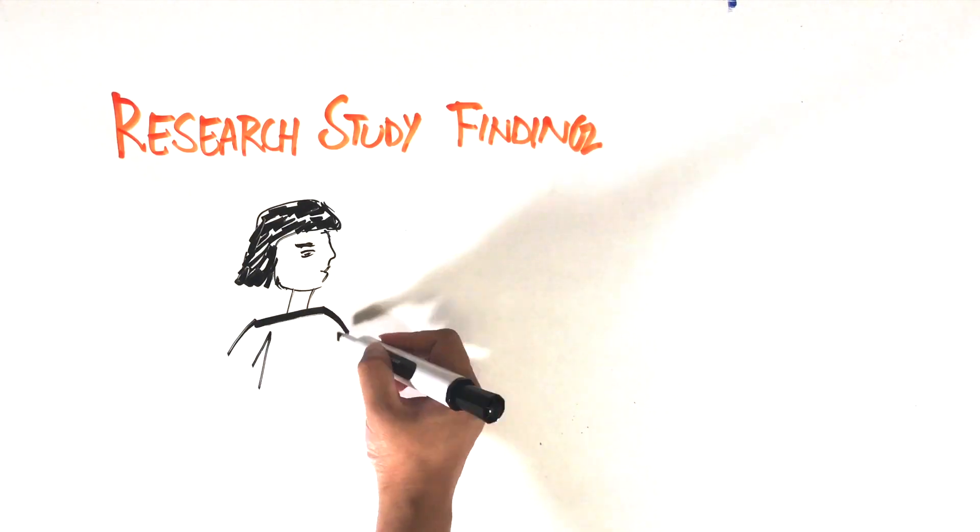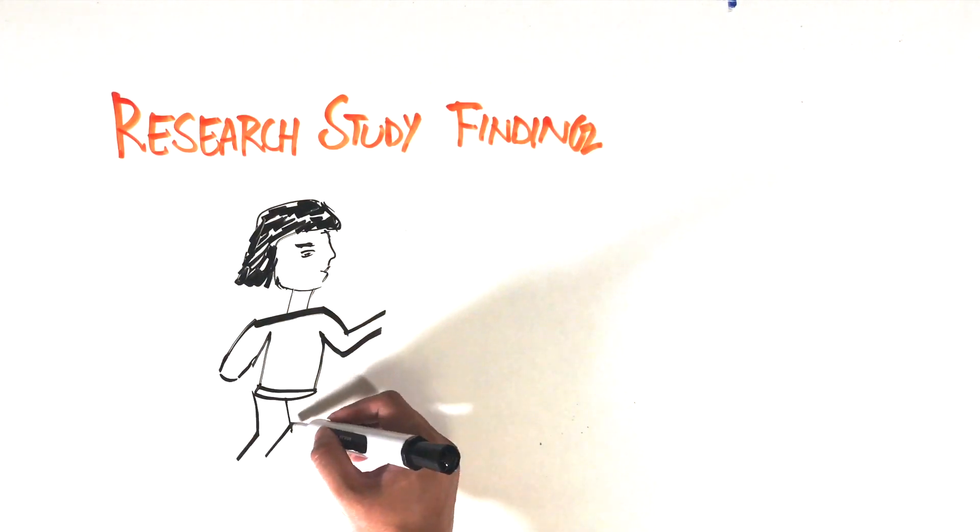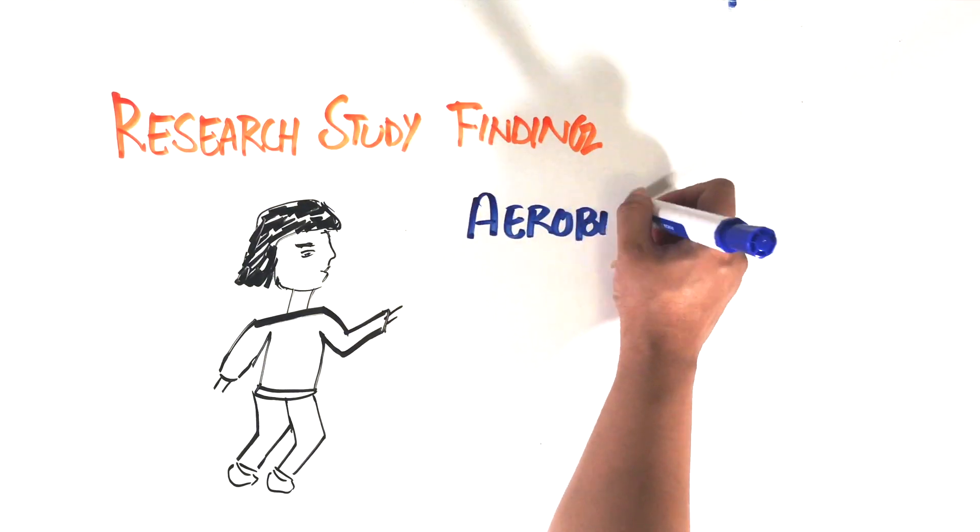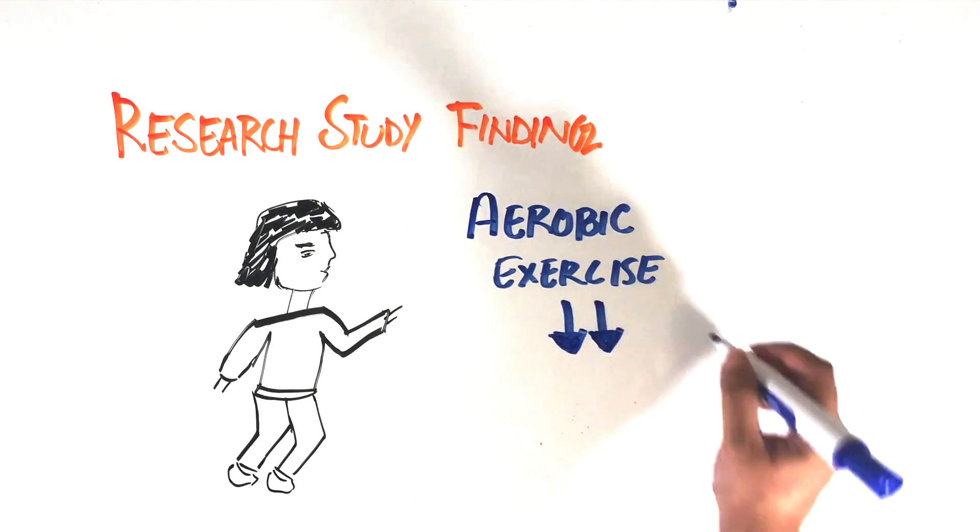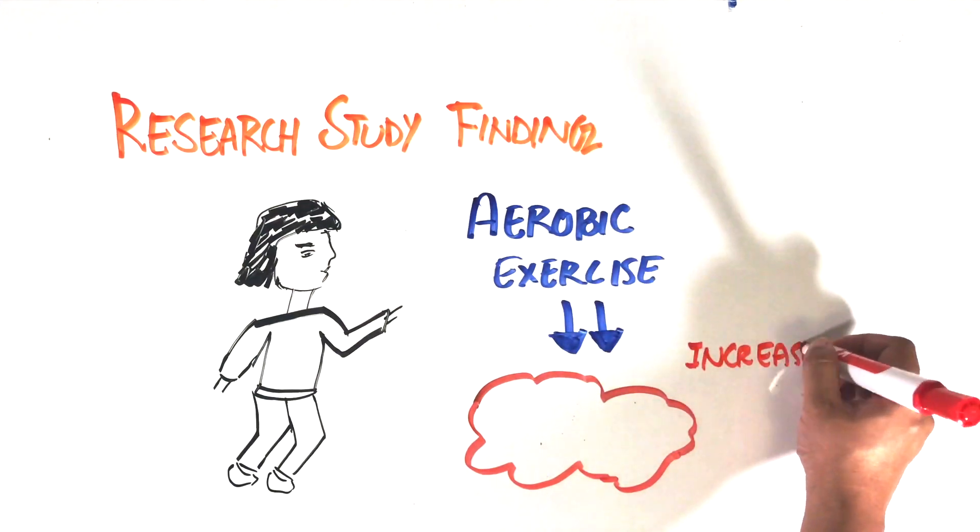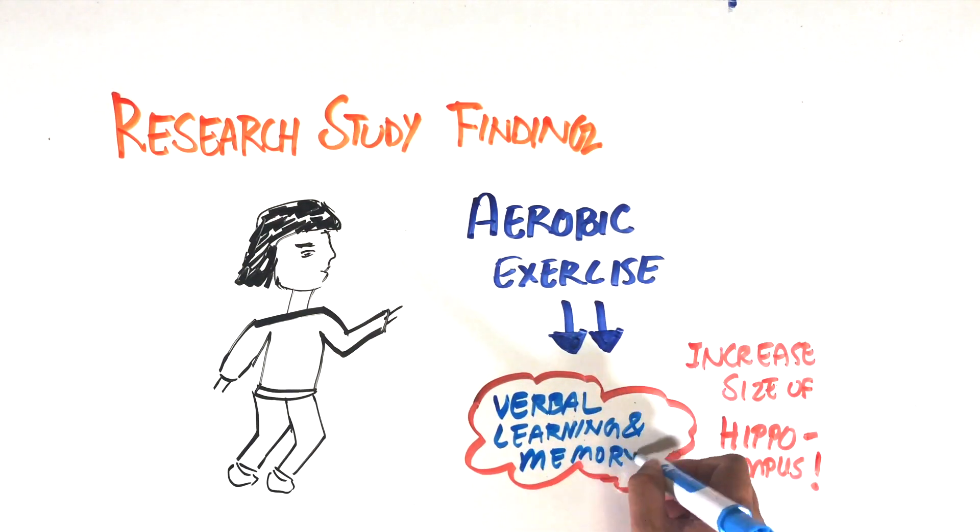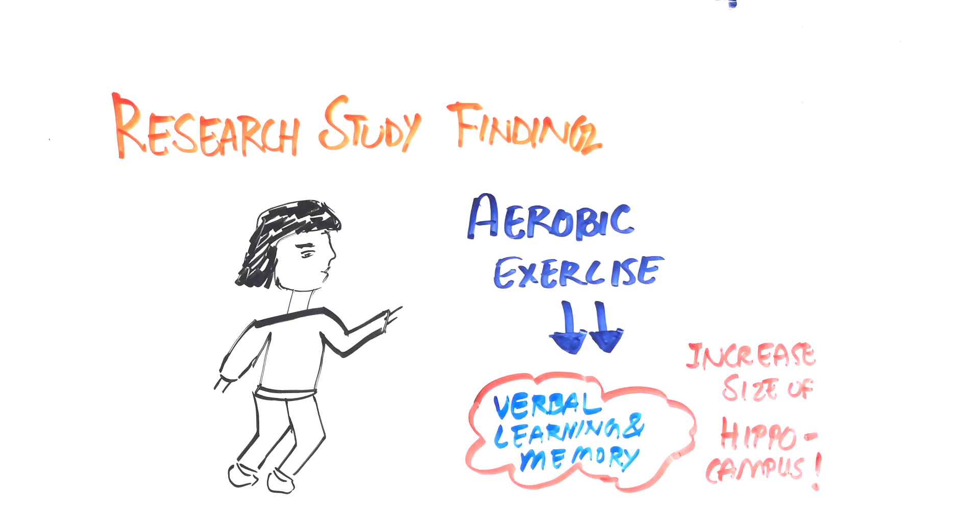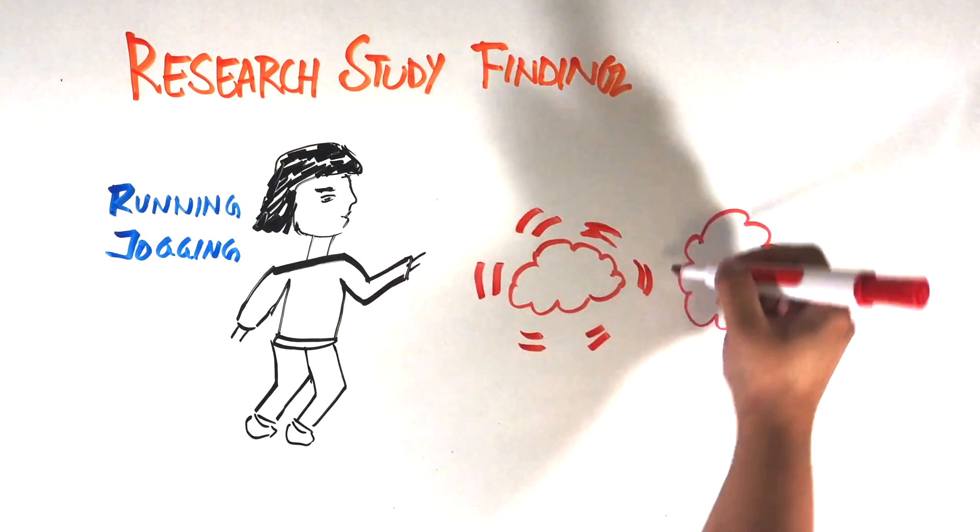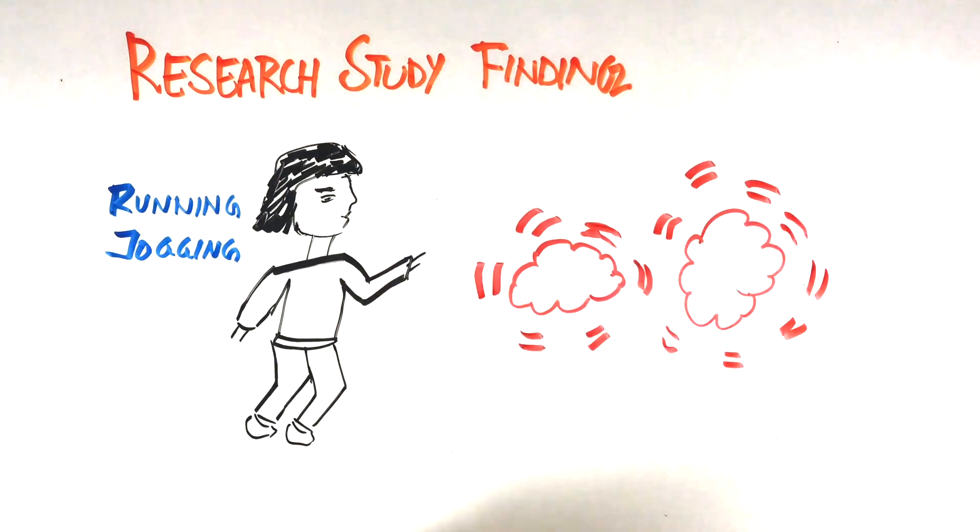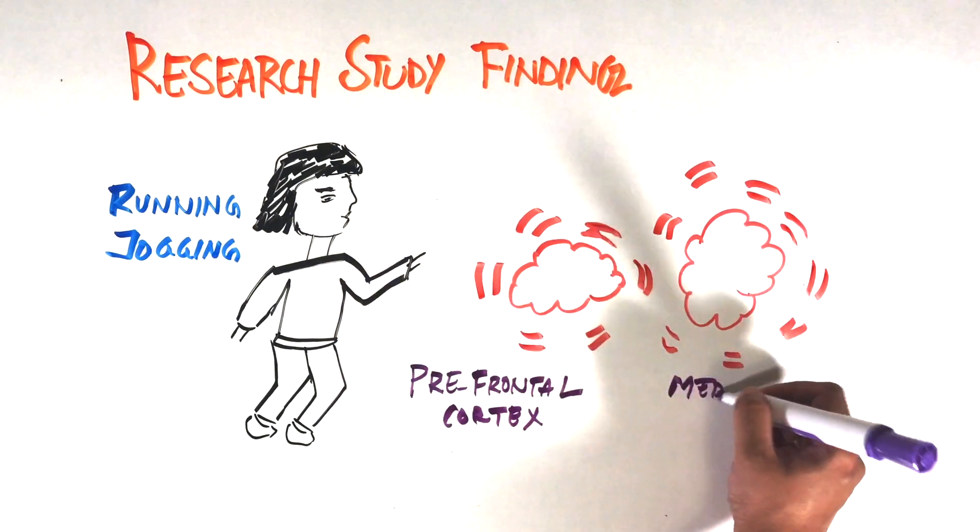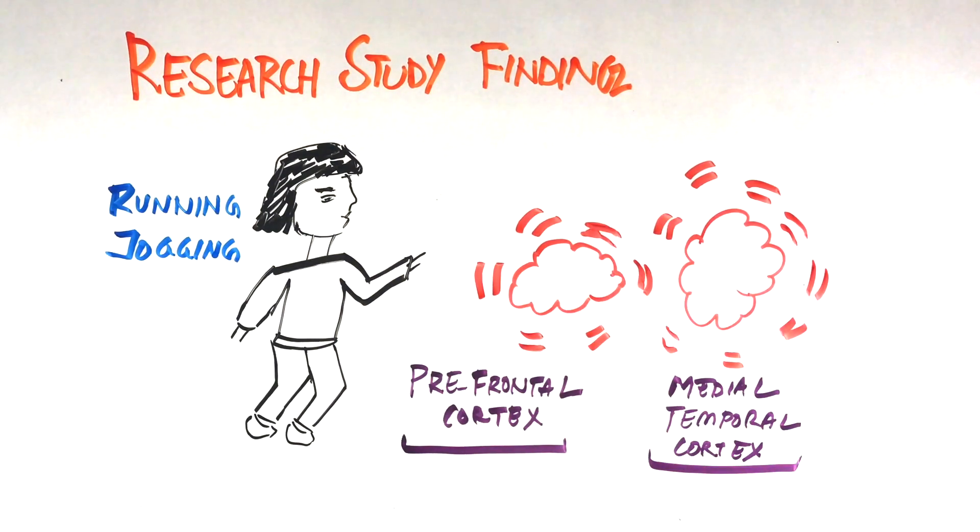In a research study conducted at University of British Columbia, it turns out that regular heart-pumping aerobic exercise boosts the size of the hippocampus region of the brain. This is the area that is responsible for verbal learning and memory. Other studies have also found an association with exercise and increased volume of the prefrontal and temporal medial cortex. These are the parts of the brain that control thinking and memory.